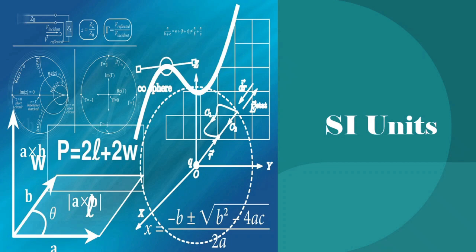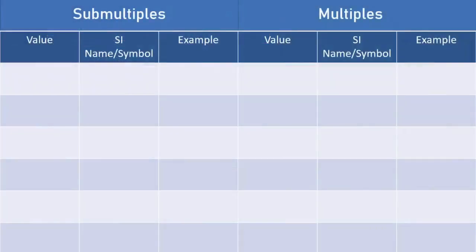We're also going to take a look at some SI-derived units. These are units used for certain physical quantities — for instance, the Newton is used to represent force. But first, let's start by taking a look at the multiples and submultiples of SI units. This is something you have to become comfortable with, and it's not difficult — it just requires some basic memorization. We'll start with the submultiples.